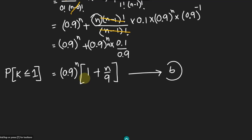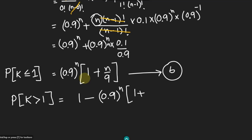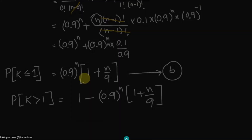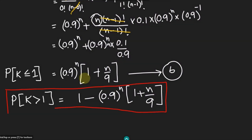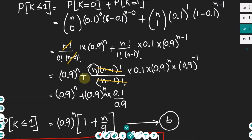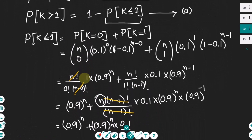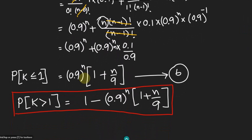Putting equation B into equation A, the probability that k is greater than 1 equals 1 − 0.9^n · (1 + n/9). This is the answer: the probability that more than one item in a batch of n items is defective. That's it for today — we have solved this question and I will see you with more questions in our upcoming video. Till then, take care of yourself and I will see you soon.